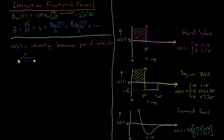If we were to evaluate the relevant integral for the second virial coefficient — I'm not going to work through it for the hard sphere or square well, but specifically for the van der Waals equation of state which has those a and b parameters — you would find that the second virial coefficient equals b, the molecular size parameter, minus a, the attraction strength, over RT.